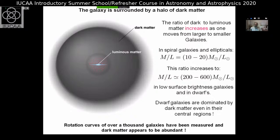The ratio of dark to luminous matter actually increases as one moves from larger to smaller galaxies. In spiral and elliptical galaxies, the mass-to-light ratio is about 10 to 20 times the solar value. This ratio increases to several hundred for low surface brightness and dwarf galaxies. Some dwarf galaxies are dominated by dark matter even in their central regions. This rotation curve has been measured for over a thousand galaxies, so dark matter appears to be everywhere — each galaxy appears to be surrounded by it.